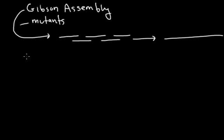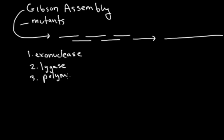Gibson assembly requires a few ingredients. One, exonuclease, two, ligase, three, polymerase, and four, nucleotides. And this is of course in addition to your building blocks, which presumably have already been designed.